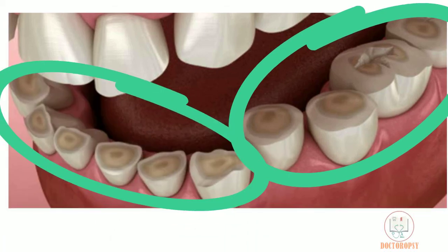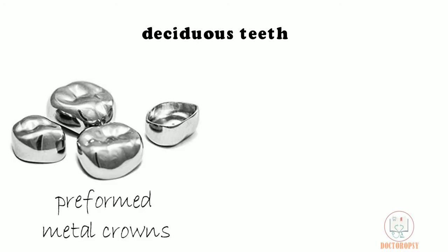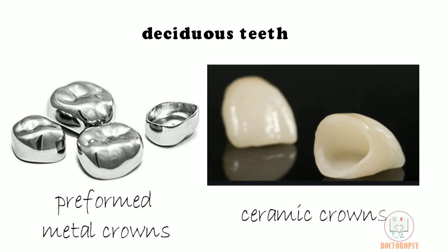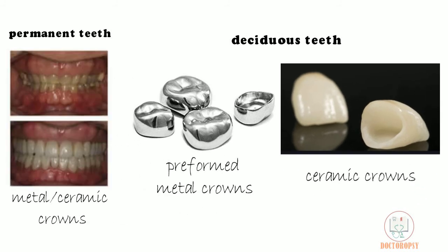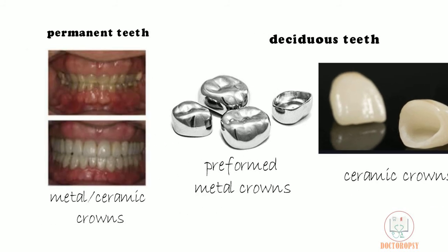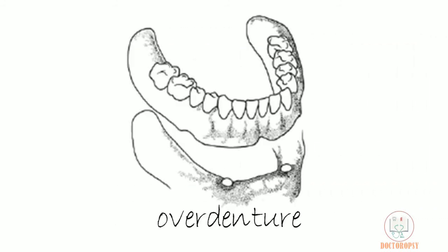In children, the deciduous teeth are protected by use of preformed metal crowns on posterior teeth and aesthetic restorations like ceramic crowns on anterior teeth. Similar crown restorations are done in permanent dentition. In case of loss of major tooth structure by attrition, over dentures are provided.